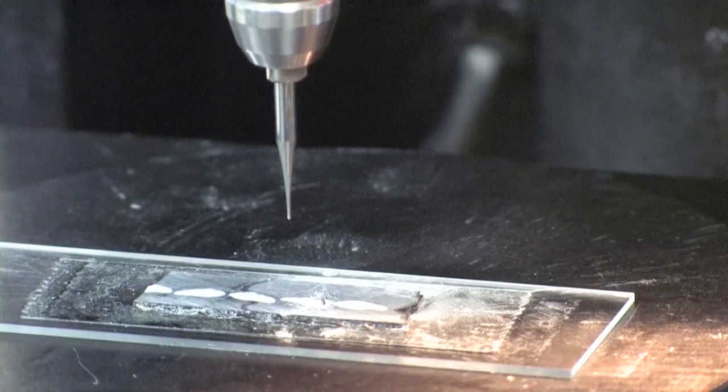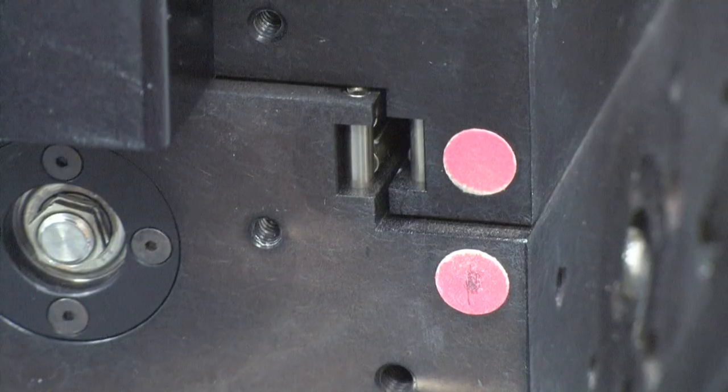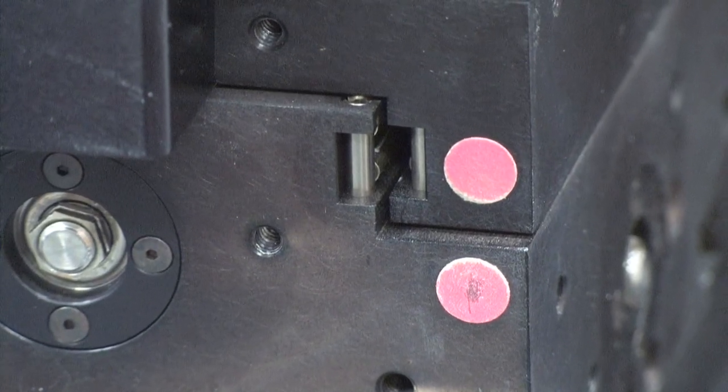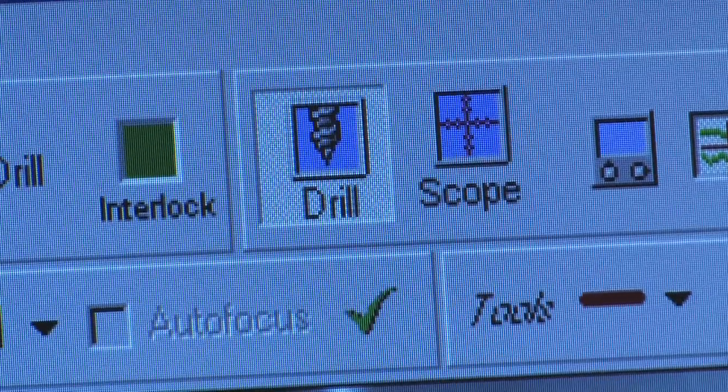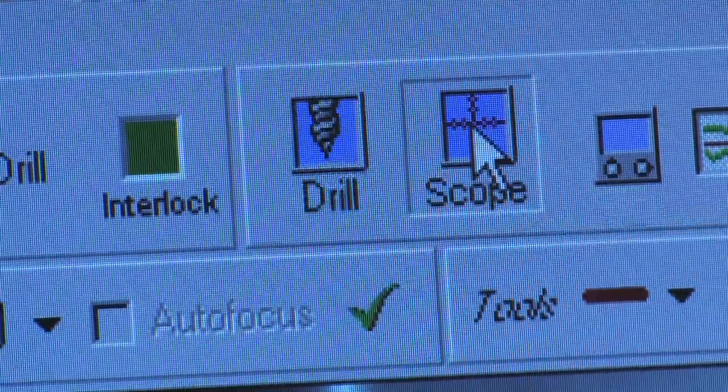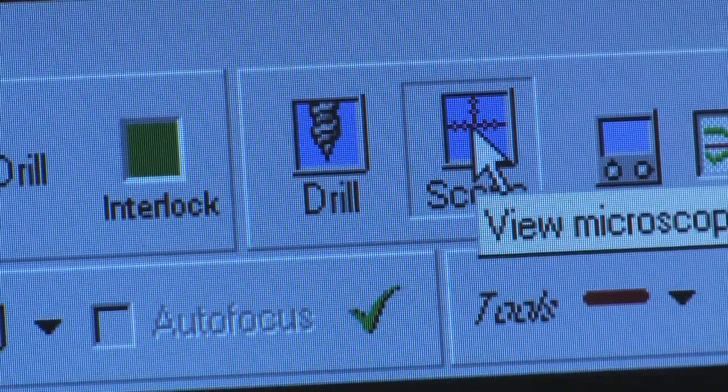If the drill does not drill in the area you want it to, the X-Y offset is out of alignment and will need to be readjusted. If switching from the drill camera to the scope camera and the video screen stays on the drill camera with the colorful line, hit the scope camera button again.